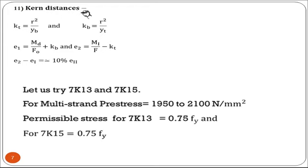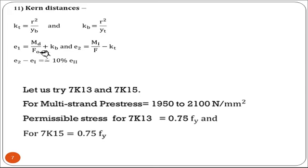We then find the kern (current) distances — the distances where the resultant forces develop such that actual stresses do not exceed the permissible limit. KT = r² / YB and KB = r² / YT. Eccentricity E1 = MD / P0 + KB and E2 = Ml / P − KT. E2 − E1 is approximately equal to 10% of E2.